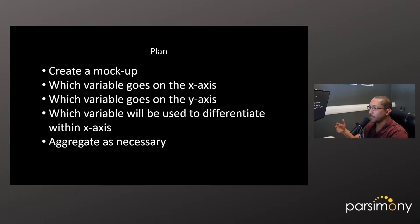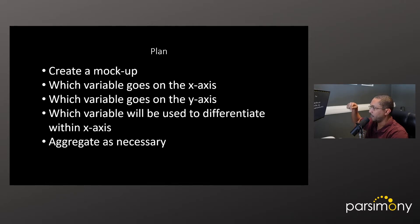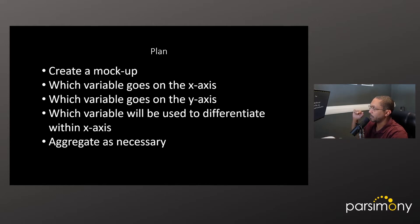Then you want to identify which variable is going to go along the x-axis, the horizontal axis. In a grouped bar chart, this will often be the variable that acts as the larger grouping, within which there will be individual bars characterized by another variable. The next thing you should identify is which variable will go along the y-axis — the variable associated with the height of the bars. Then identify which variable will be used to differentiate the bars within that larger grouping along the x-axis.